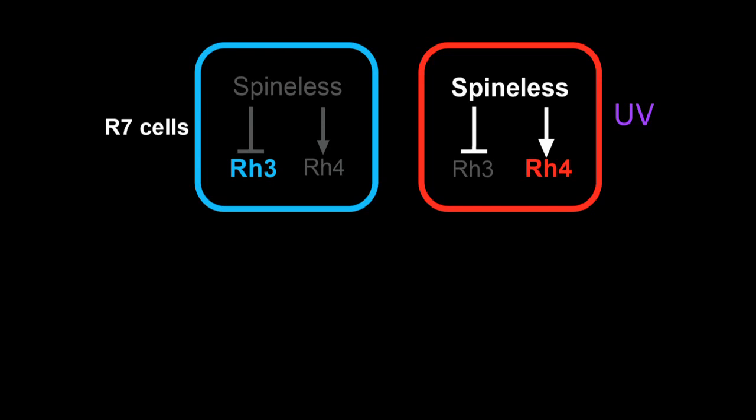So we were wondering how this actually affects vision. Does it have a behavioral output? So to get at this question, I told you before that the R7 cells express either rhodopsin 3 or 4. And both of these are UV-detecting proteins with overlapping spectra. So that makes it really hard to assay for any vision differences.